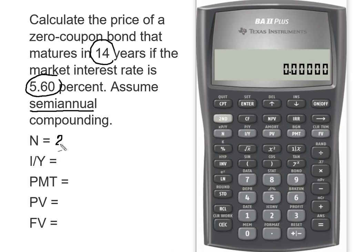Because we have semi-annual compounding, we're going to actually have 28 periods, and our interest rate has to be divided by 2 because we have to go from an annual rate to a semi-annual rate. So that's going to make our interest rate 2.80%.